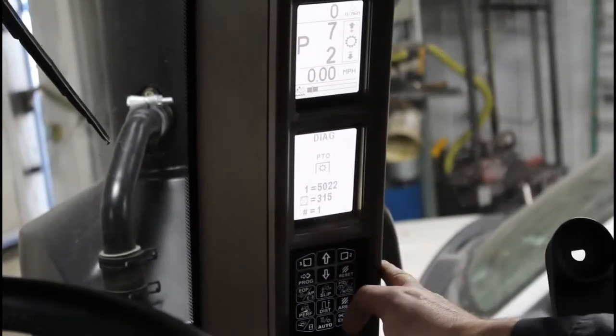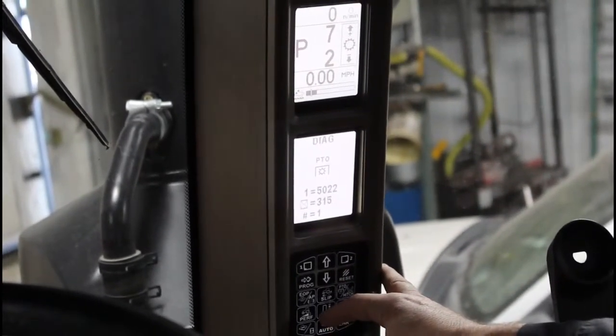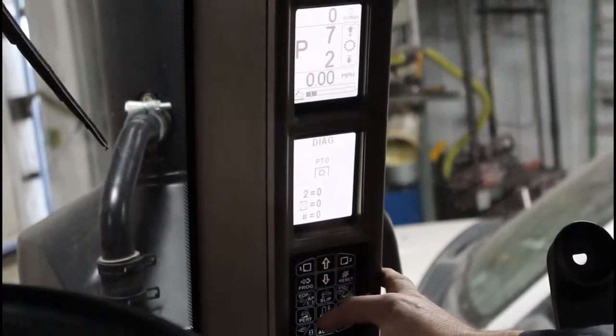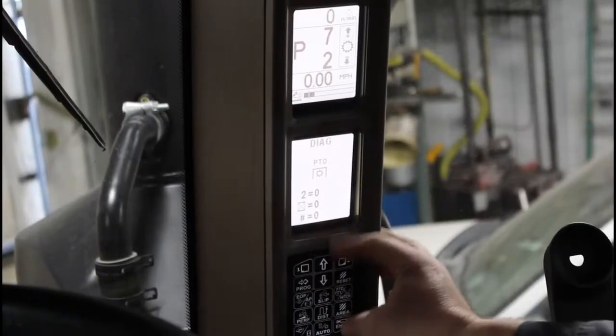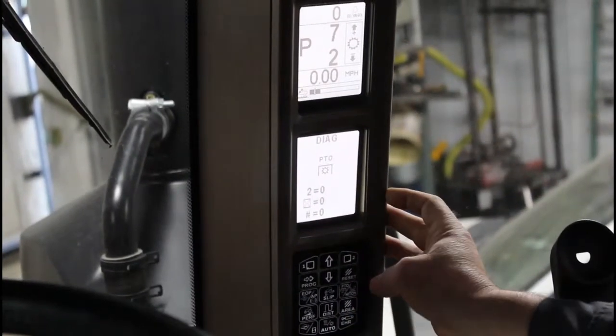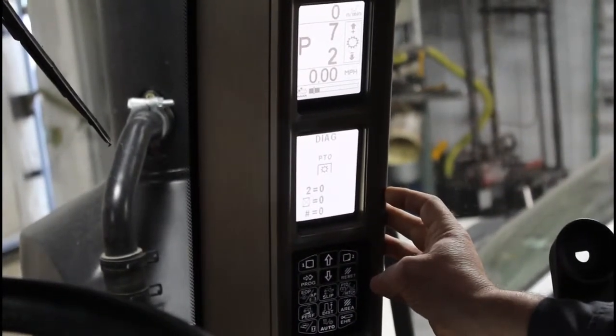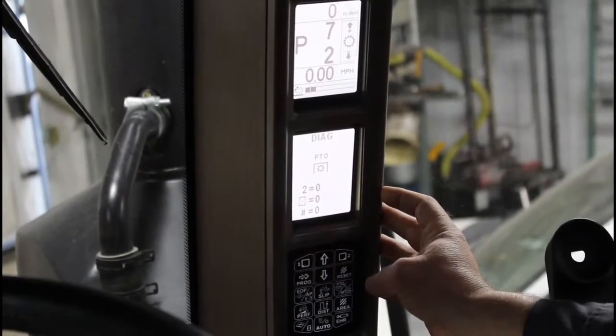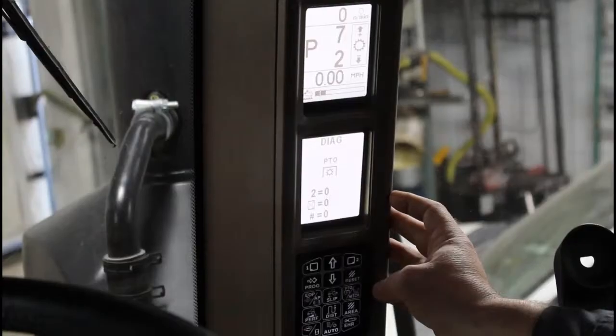If we want to check and see if there are any other fault codes in the PTO section, we can simply hit the up button and it will switch to fault code number two which you can see is zero at zero hours and zero times. So that means there is only the one fault code in this tractor.